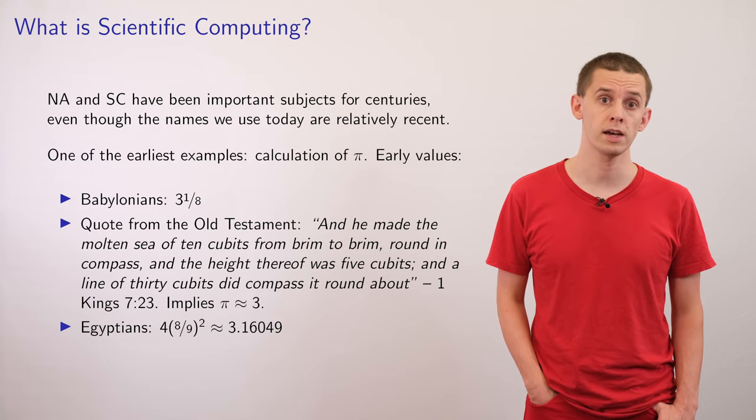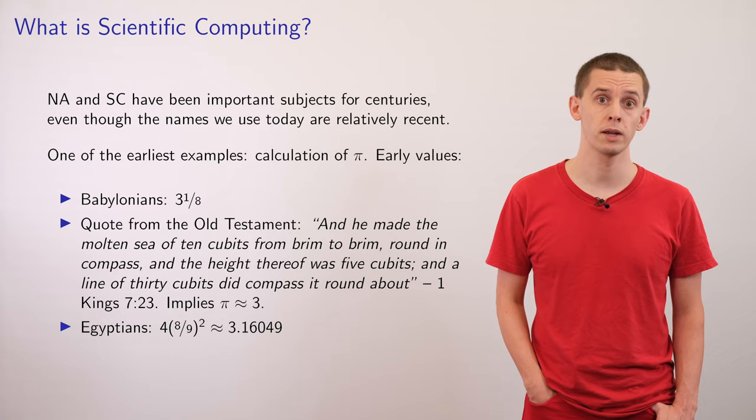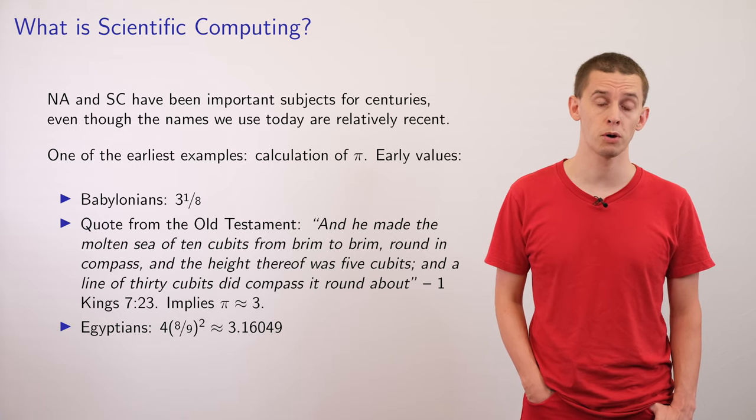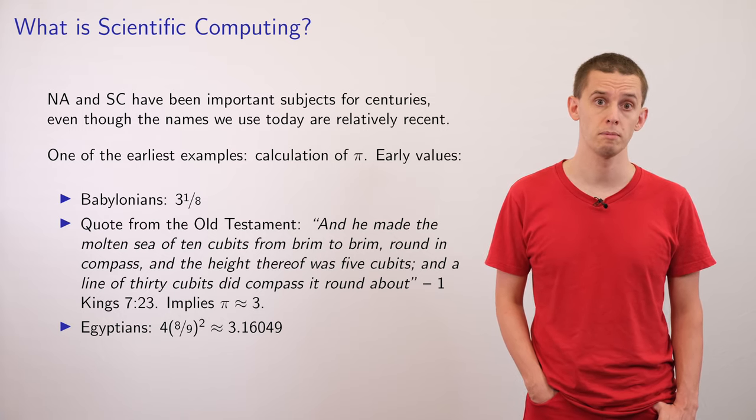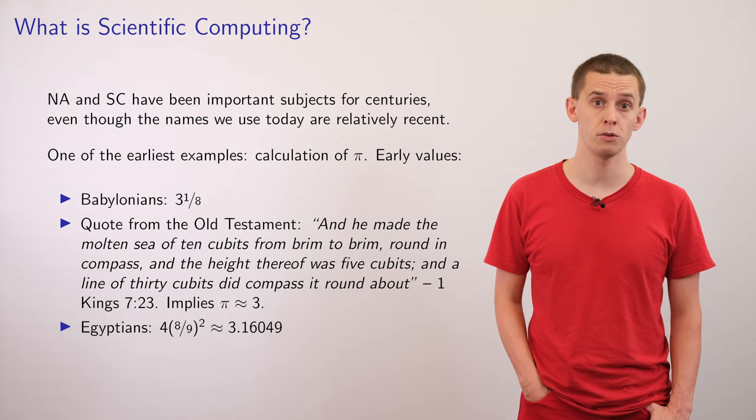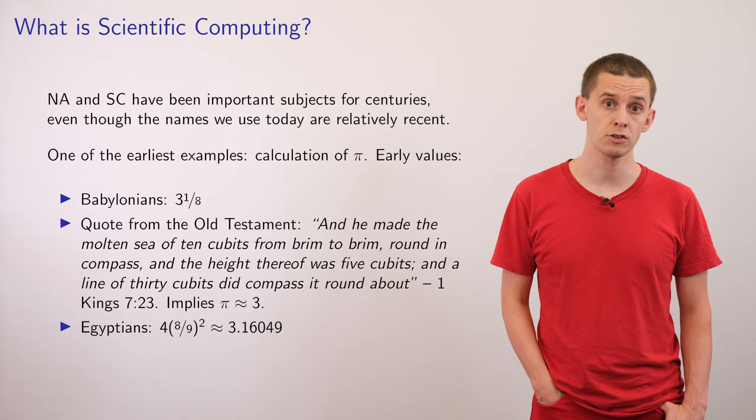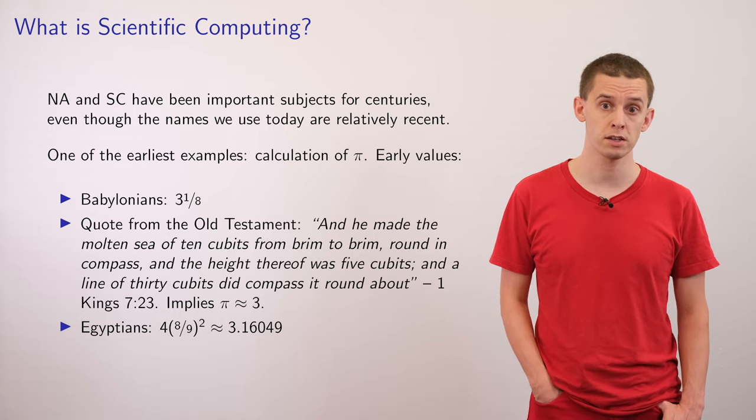A really great example of this is the calculation of pi, and we can look back to antiquity to find that a number of approximations for pi were made. The Babylonians use the value of three and an eighth, and there's actually a verse in the Bible from the Old Testament that states,